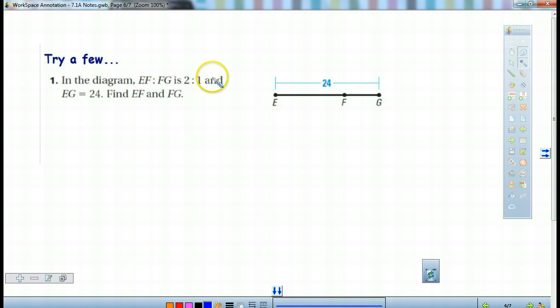Again, we've got these segments. So it's 2 to 1 this time. So we've got 2x and 1x. We add them together to get 24. So we're going 2x plus 1x equals 24 or 3x equals 24. Divide both sides by 3 and x is going to give us 8.